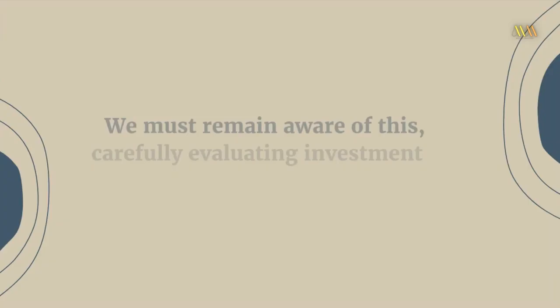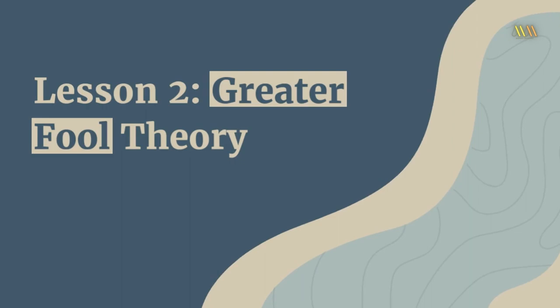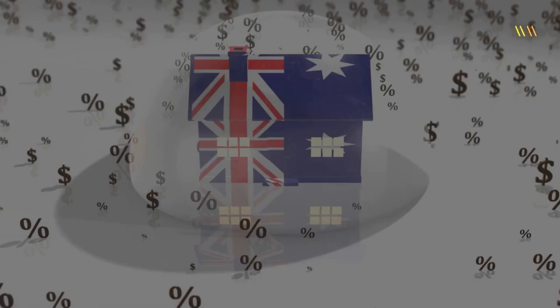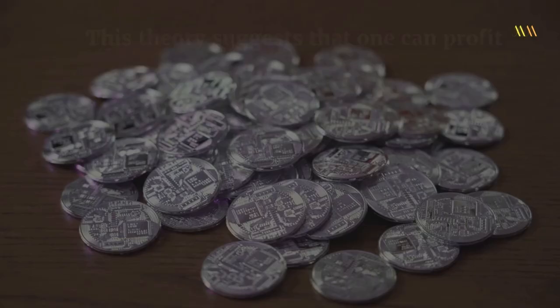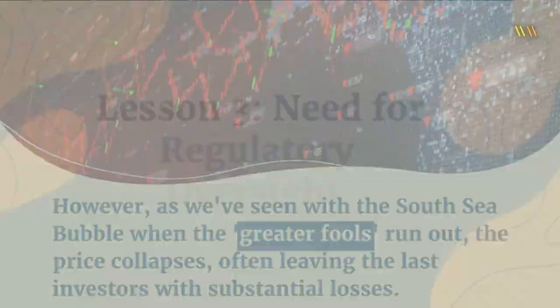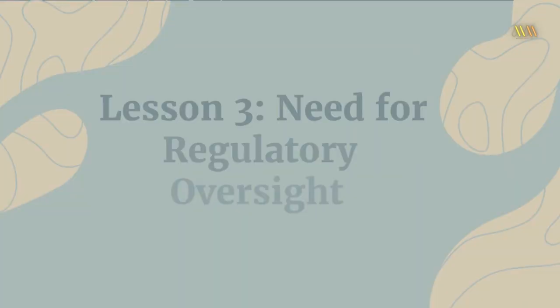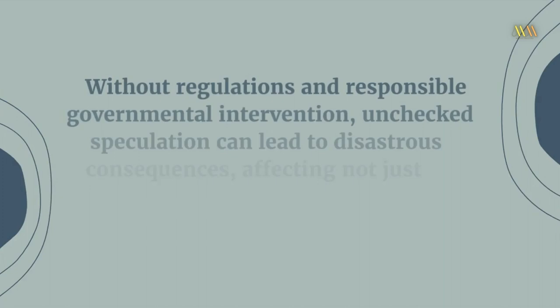Lesson 2 — Greater Fool Theory: The bubble also brought the greater fool theory into sharp focus. This theory suggests that one can profit from overpriced assets because there will always be someone — a greater fool — willing to pay a higher price. However, as we've seen with the South Sea Bubble, when the greater fools run out, the price collapses, often leaving the last investors with substantial losses. Lesson 3 — Need for Regulatory Oversight: The South Sea Bubble underscores the need for regulatory oversight in financial markets. Without regulations and responsible governmental intervention, unchecked speculation can lead to disastrous consequences, affecting not just individual investors but entire economies.